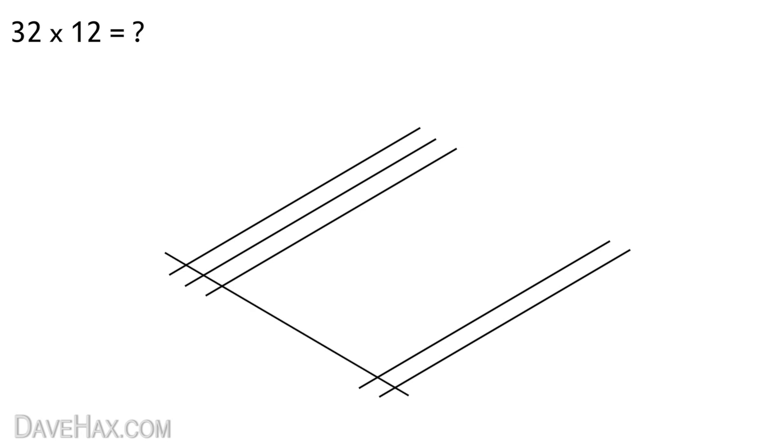So here's another quick example 32 times 12. The first digit of the first number is 3 so we draw three lines here. The next number is 2 so draw two lines here. Then we have the multiplication sign and the next number is 1 so draw one line from here to here. And the final number is 2 so draw two lines here. Then we mark out our three zones again.